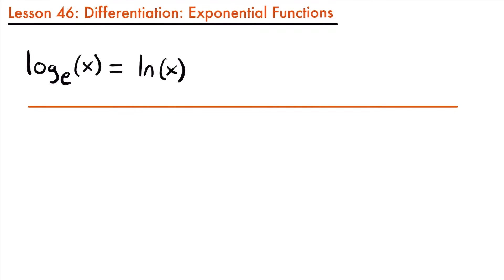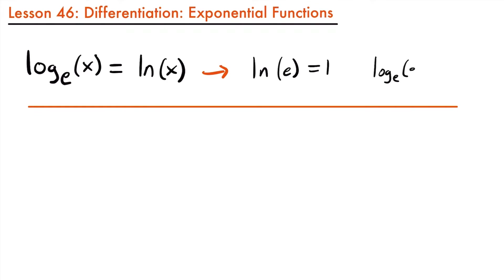Exponential functions are the inverse functions of logarithmic functions. The natural log function is the log function with the base of e, where e is Euler's number, which is another special irrational number like pi that shows up a lot in mathematics. The natural log of e is equal to 1, the same as log base e of e equals 1.